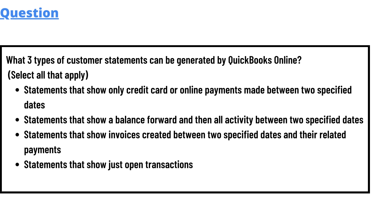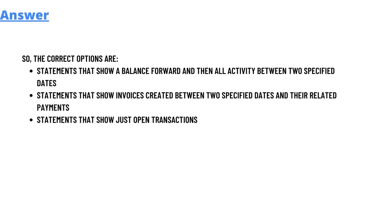Statement that shows a balance forward and then all activity between two specific dates. Statement that shows invoices created between two specific dates and their related payments. Statement that shows just open transactions. So that's the question.